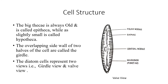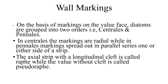In the center of the cell, running along is a cleft-like structure called the raphe. You can also see the markings on the cell wall in both the girdle view and the valve view. These striae are made up of small equidistant dots called puncti. On the basis of markings, diatoms are grouped into two orders: Centrales and Pennales. In Centrales, the markings are radial, while in Pennales, the markings spread out in parallel series on either side of a strip. The strip with the longitudinal cleft is called the raphe, while the valve without a cleft is called the pseudoraphe.